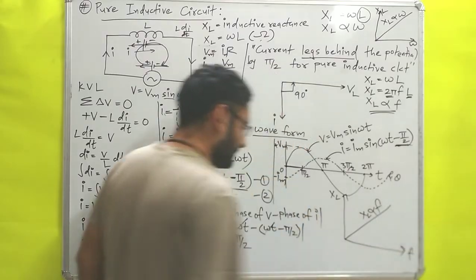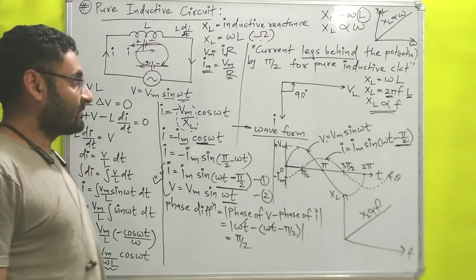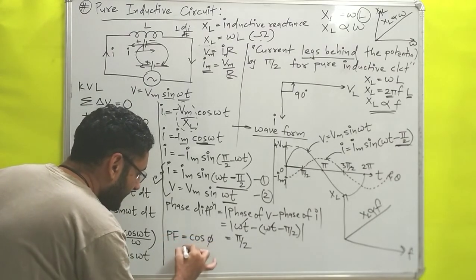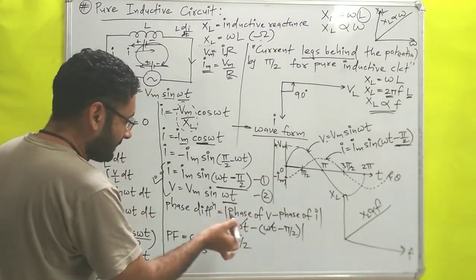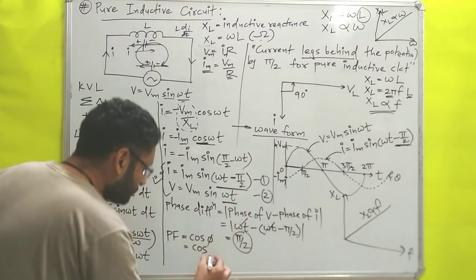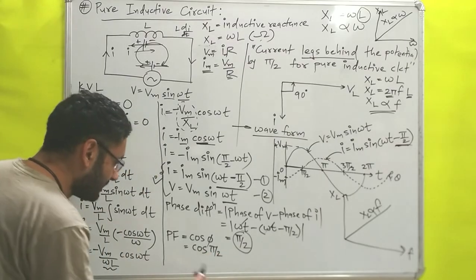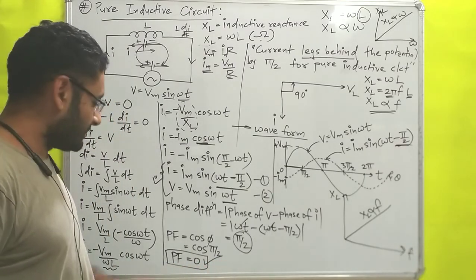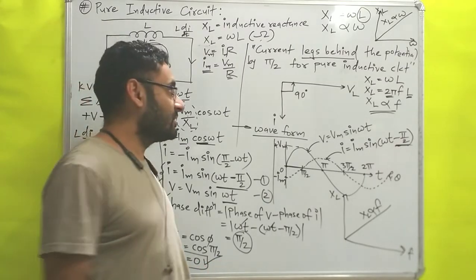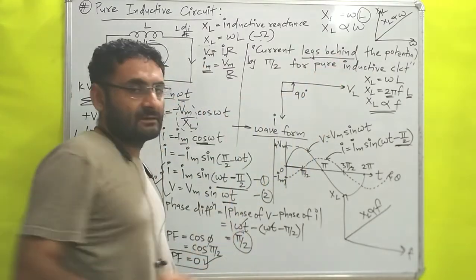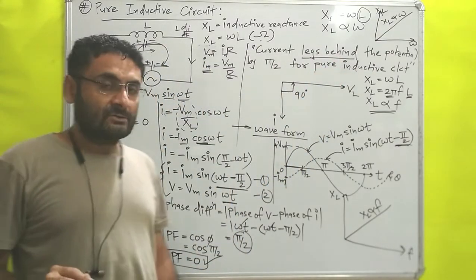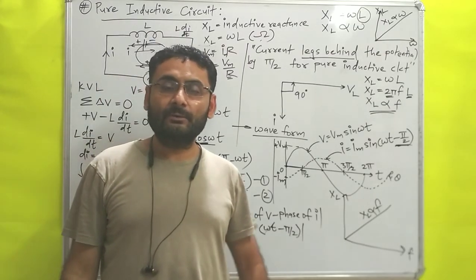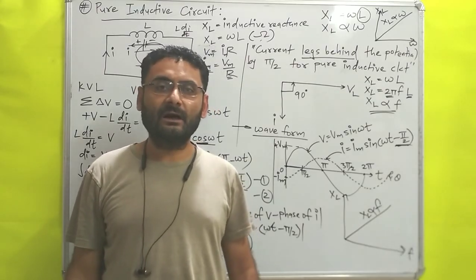Finally, regarding power factor: power factor PF equals cos phi, and the phase difference phi is pi/2. So power factor equals cos(pi/2) which equals 0. Remember: for a pure inductive circuit, power factor is always zero and current lags behind the potential by pi/2 or 90 degrees. In the next video we will discuss the pure capacitive circuit. Till then, read hard, work hard. Thank you very much.